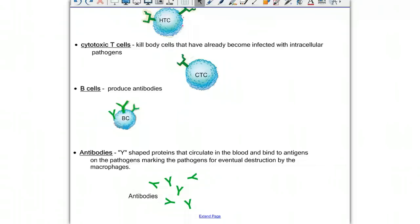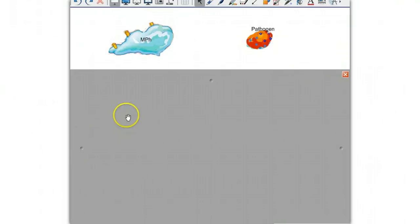You need to get comfortable with using the correct terms. Now, here's how our story begins. Here's a macrophage out on patrol when it comes across a pathogen, an invader. It recognizes that the pathogen doesn't belong by the antigens it has on it.